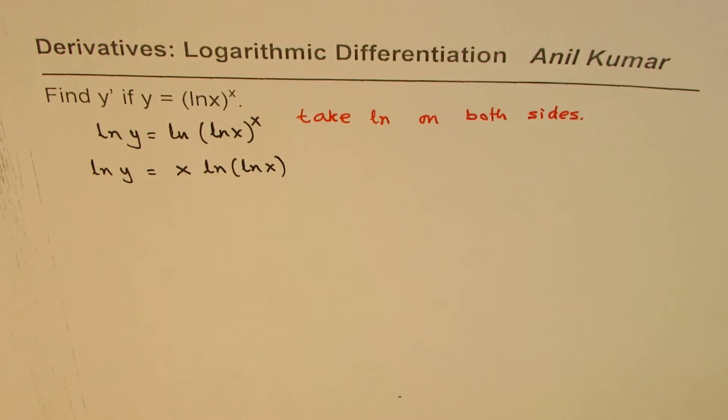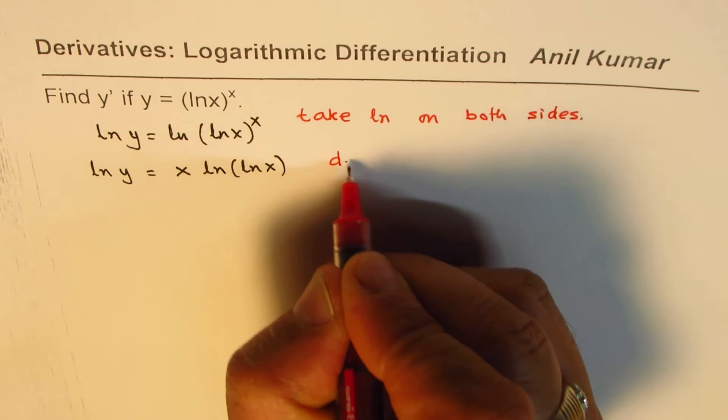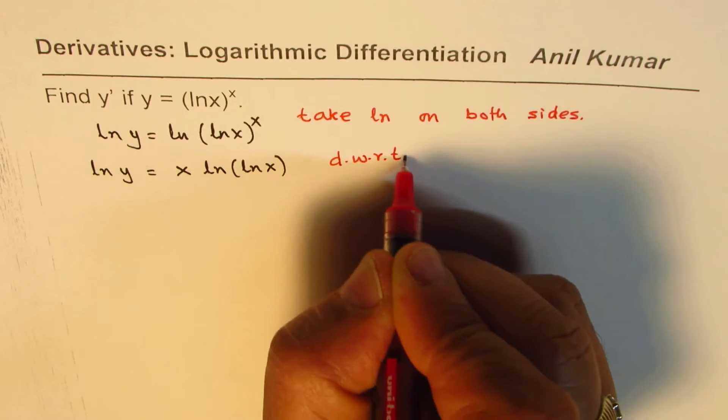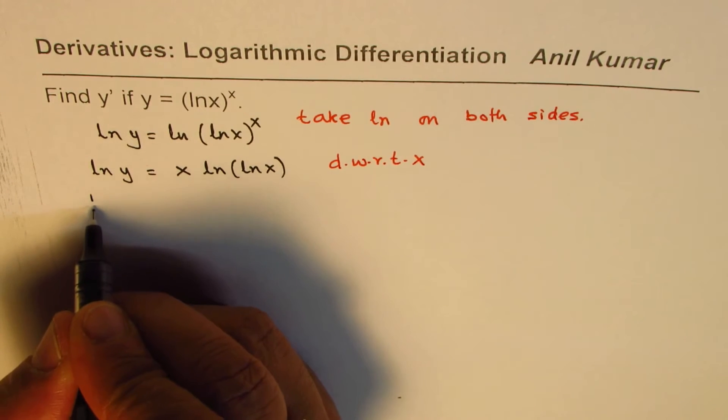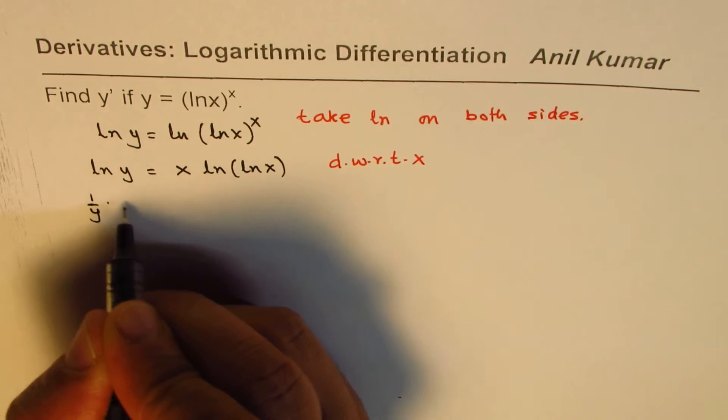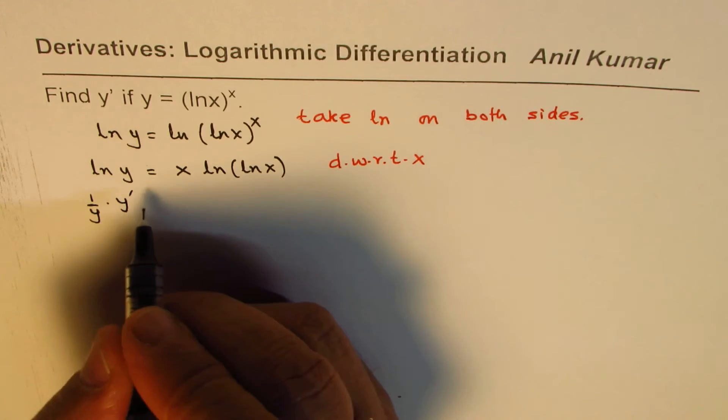So we get logarithmic equation and now we'll take derivative with respect to x on both sides. So once you take the derivative on the left side we get 1 over y times y dash dy dx.